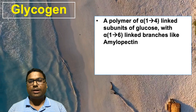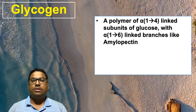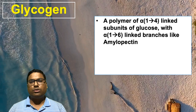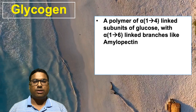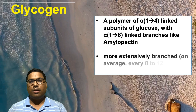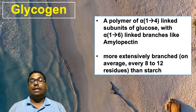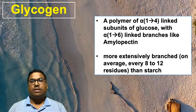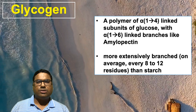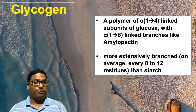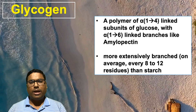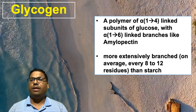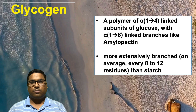a component similar to amylopectin, having glucose units alpha 1,6 linked. The difference with respect to starch is that glycogen is more extensively branched than starch.